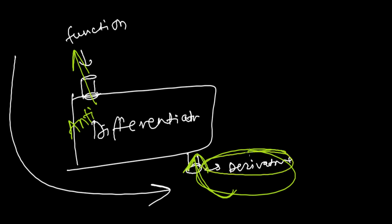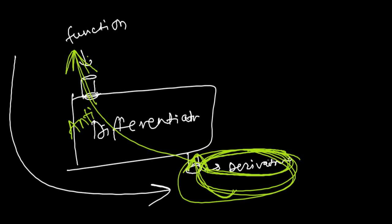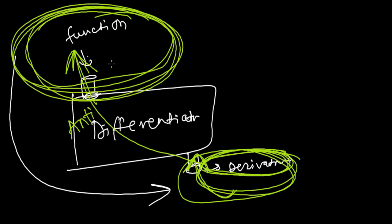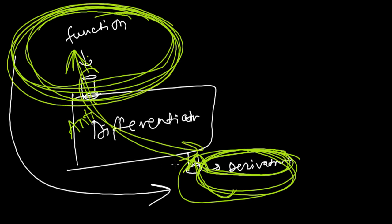Integration is the process of finding the ancestor — the original function from which we manufactured the derivative. It might sound funny, but integration is the process of finding the ancestor of the derivative, which is the function.